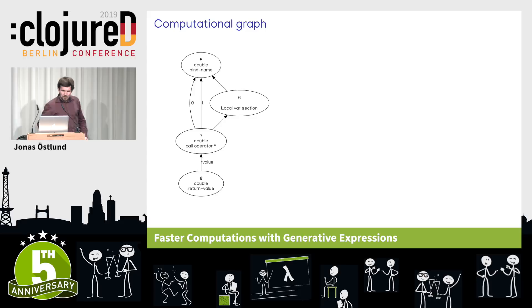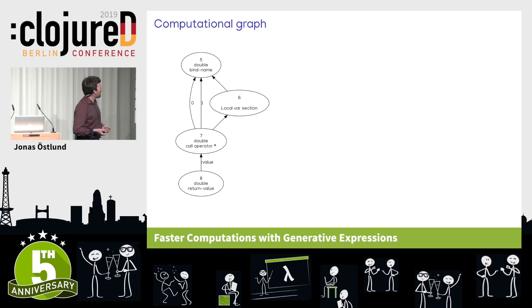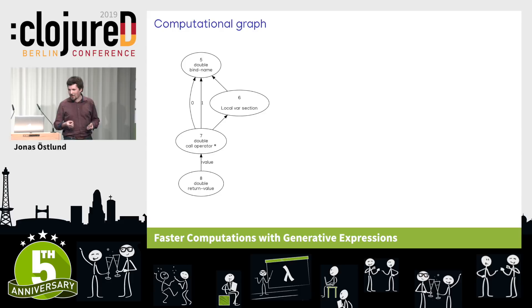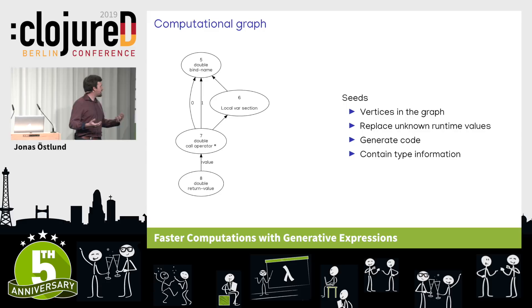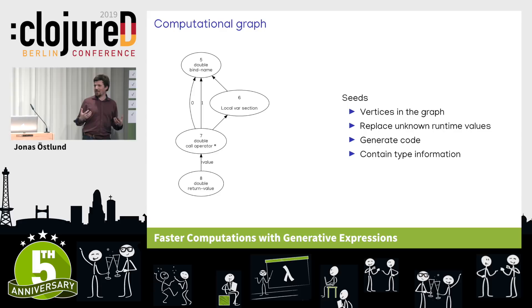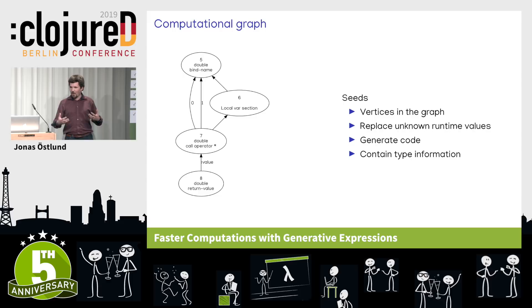These placeholder objects, which I call seeds, are part of a trace that we record when we load the code. This trace has the form of a graph. At the top we have our input parameter of type double, labelled bind-name. After that follows a local variable section, then our multiplication of type double that computes the square, depending on the input argument as indicated by two arrows labelled 0 and 1. Finally we return the result. To generate code we walk through this graph and output the code of every vertex.